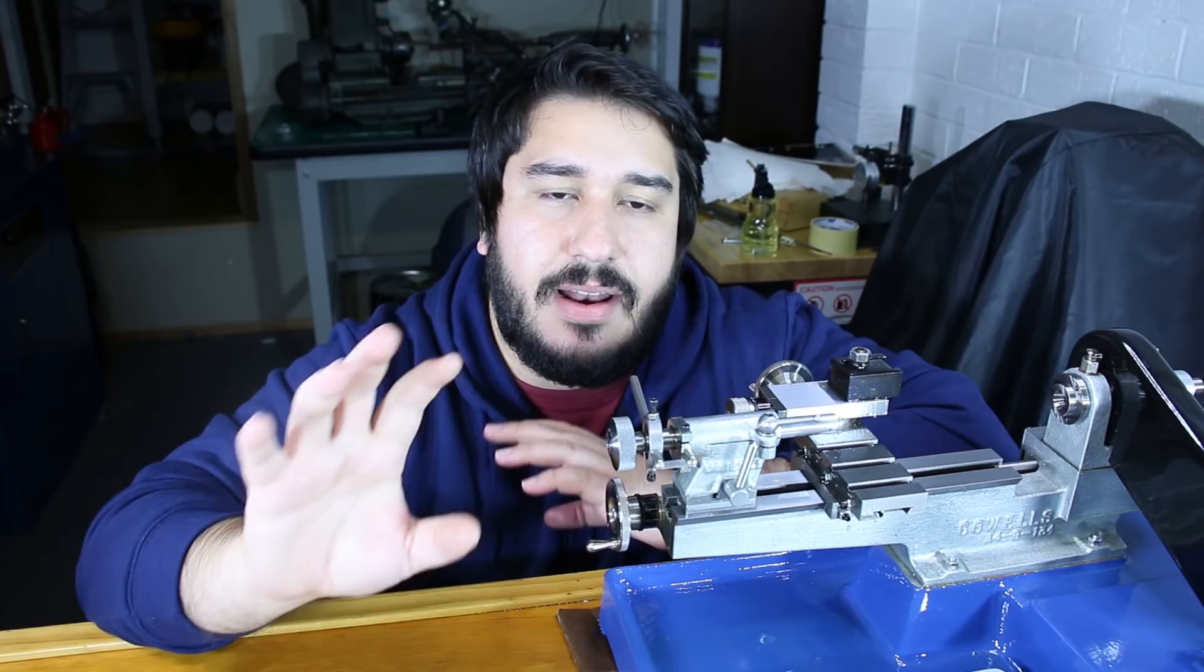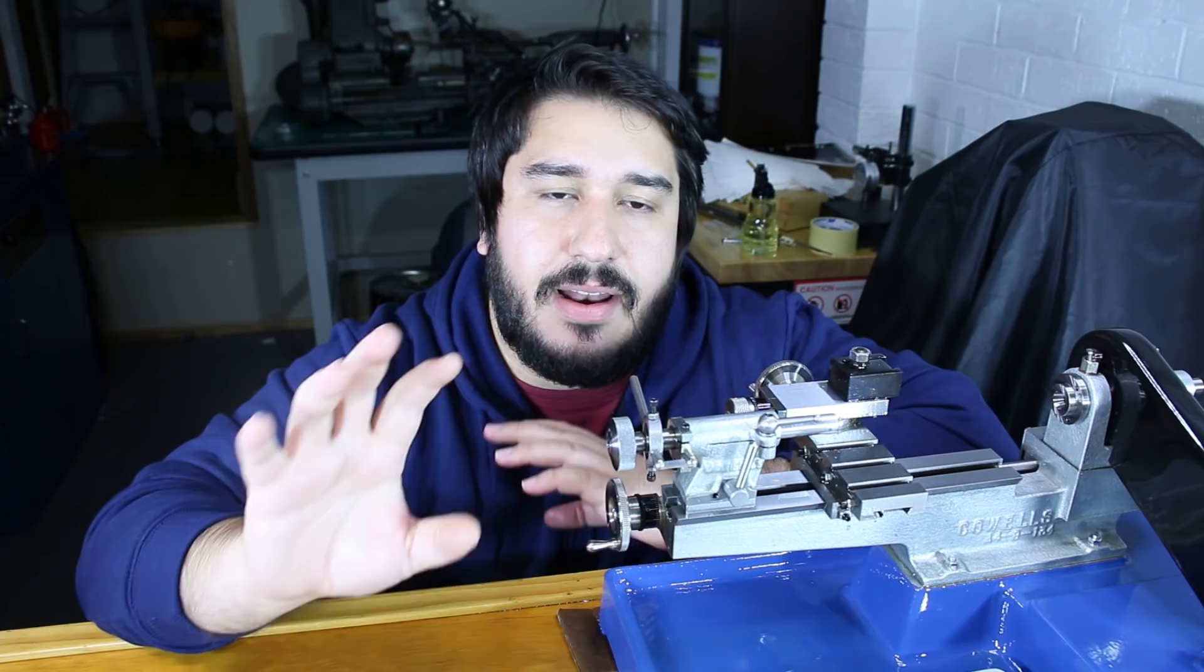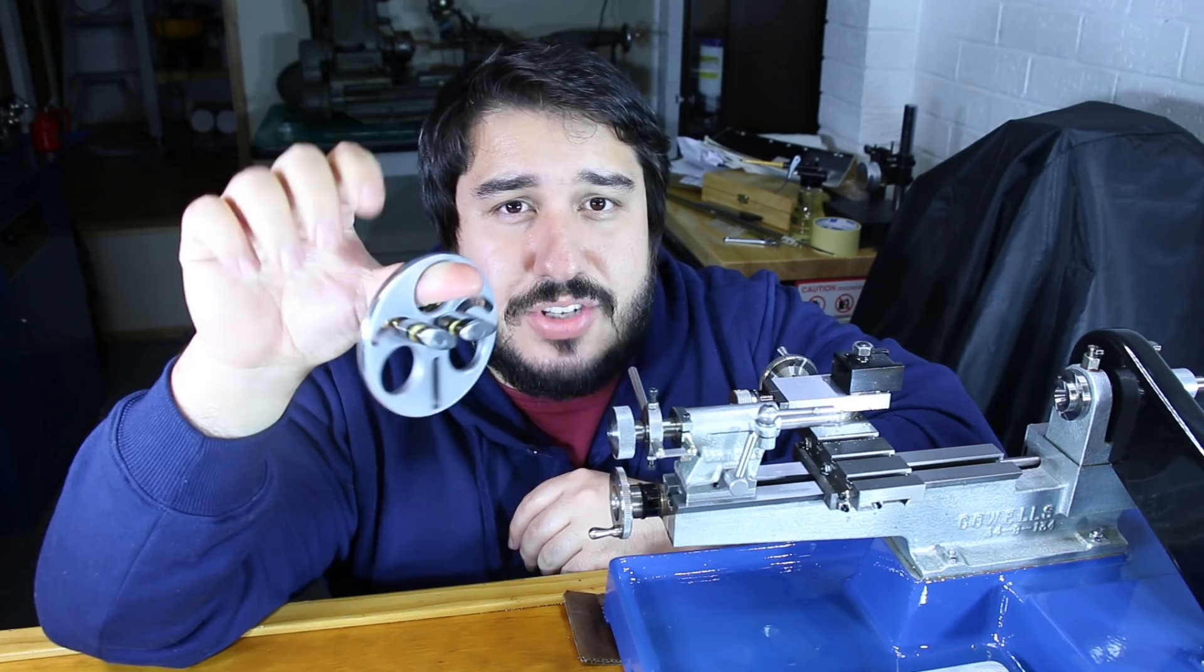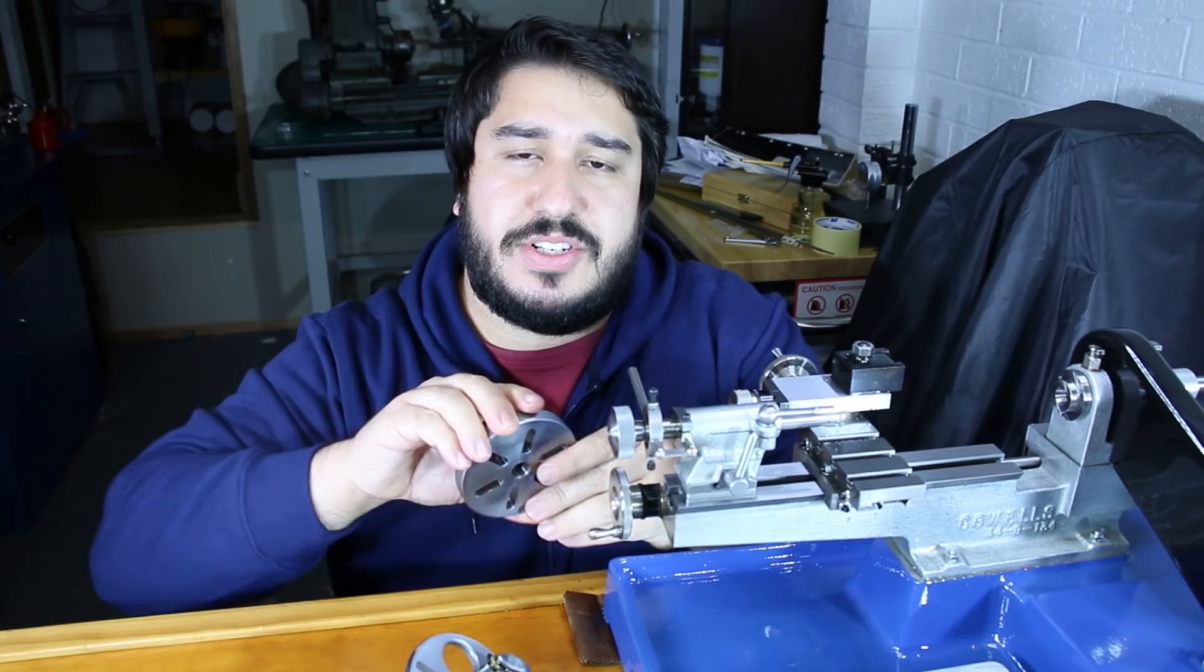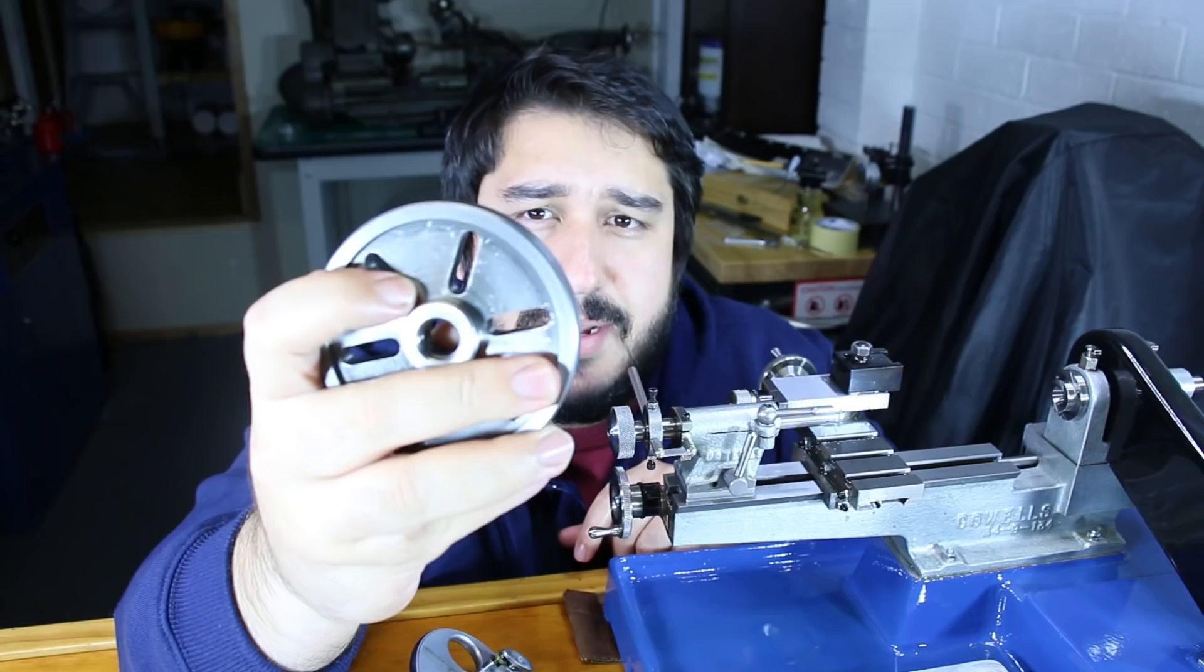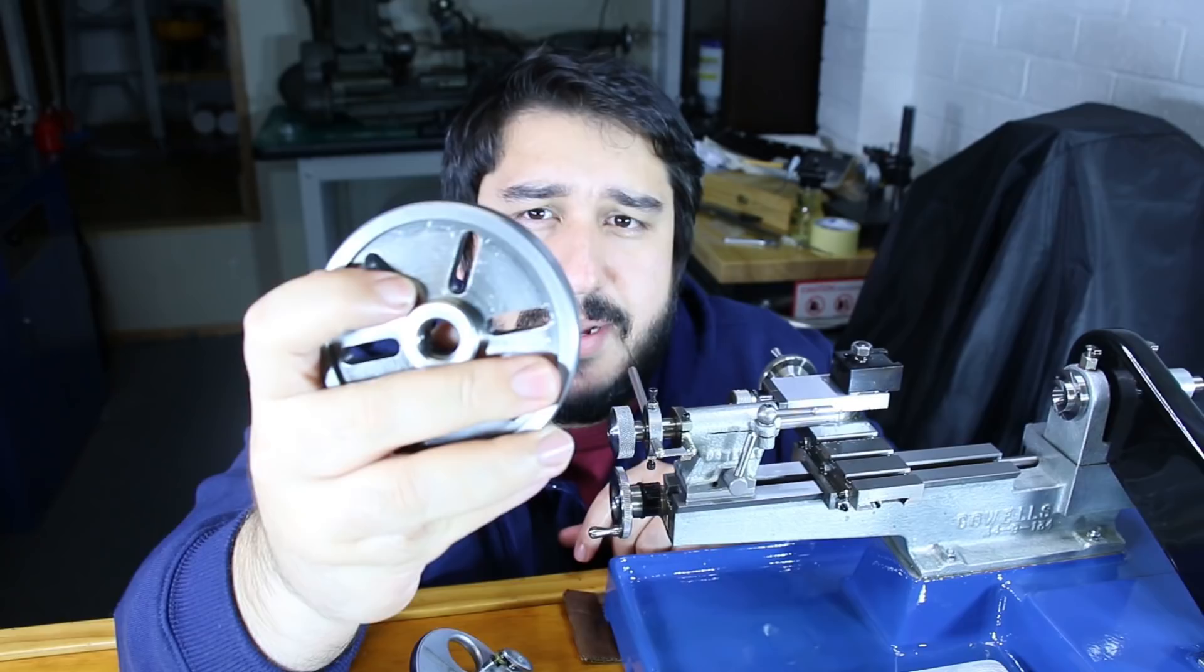So the issue with the faceplate I was using on the American watchmaker's lathe is that it's actually too large in diameter to fit onto the Cowl's lathe. So Cowl's have their own faceplate which is more like a center lathe faceplate, not like a watchmaker's lathe faceplate. In the previous episode, what I did is actually took the jaws off this faceplate and I used them on here, but the issues with that...